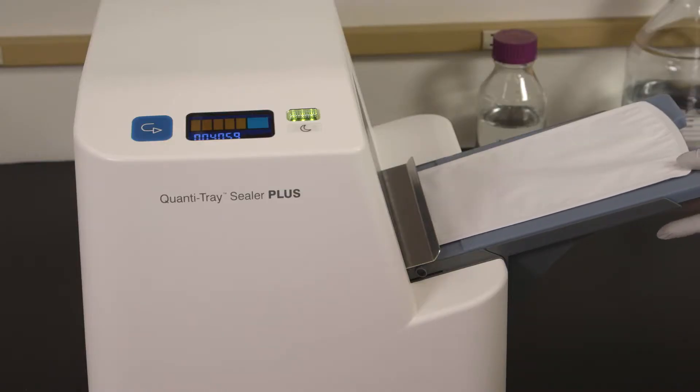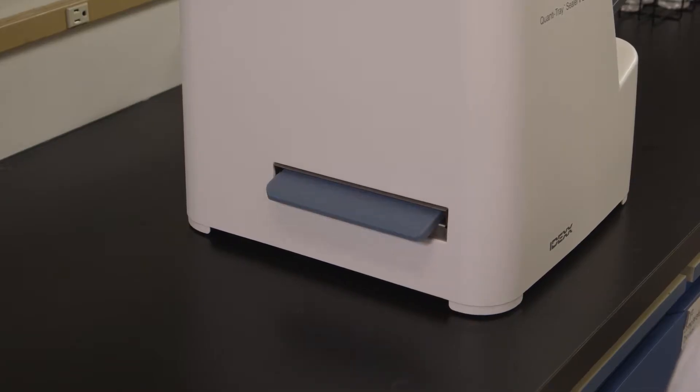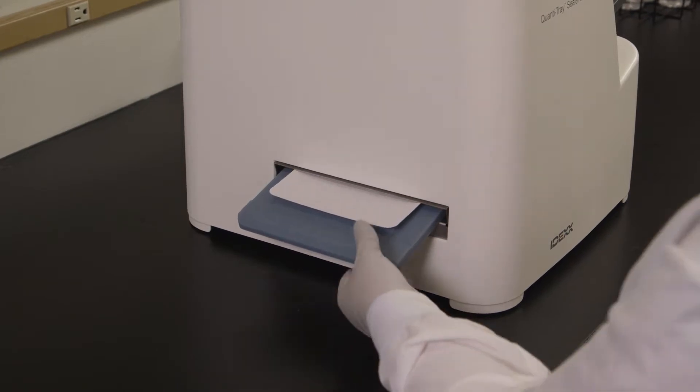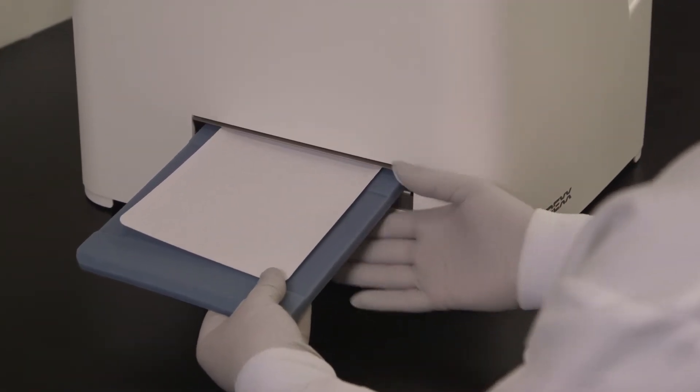If you need to reverse the motor, press and hold the reverse button. However, do not reverse the motor if the rubber insert is completely inside the sealer. The sealer distributes the sample mixture into the quantitray LEG-ALERT wells, seals the wells, and partially ejects the sealed tray.